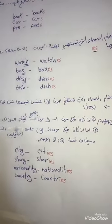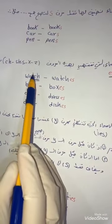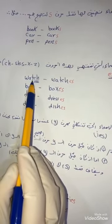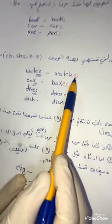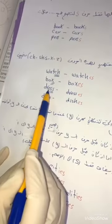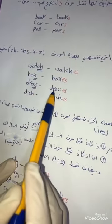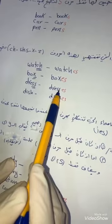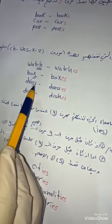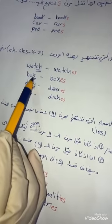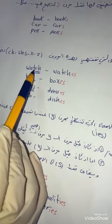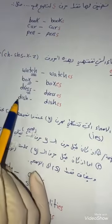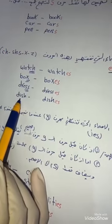Words ending in C, H, S, X, Z - we add ES to them. What do we add? We add ES. For example: watch - watches, سـاعة - ساعات. Dress - dresses - فستان - فساتين. Dish - dishes - صحون. Here we see that after CH, SH, S, X, Z we add ES.